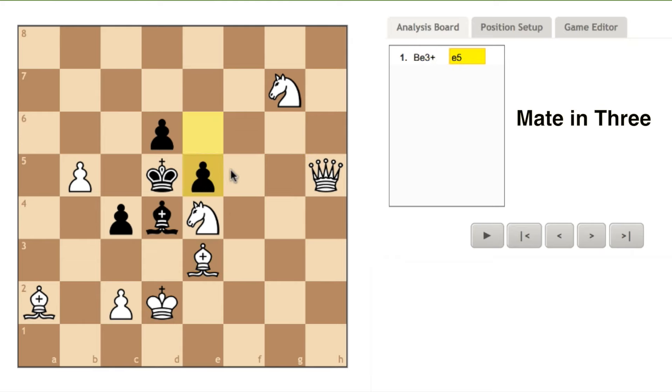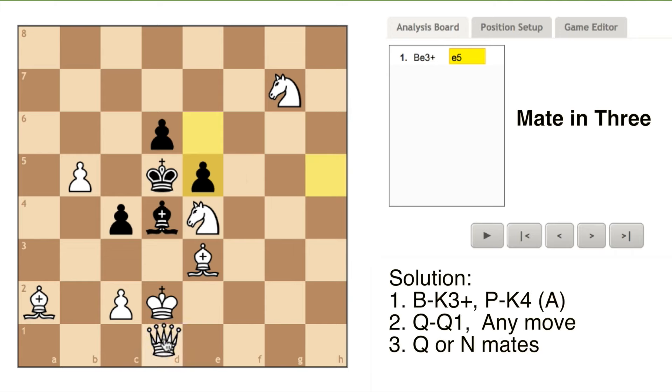If black moves its pawn to king four, then white's next move is queen to queen one. Then if black takes white's bishop at king six, white's reply is to capture black's bishop with the king at king three, putting black in checkmate.